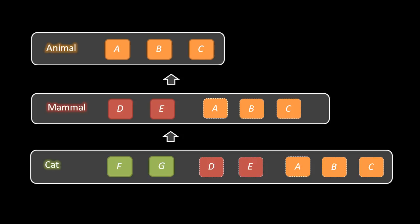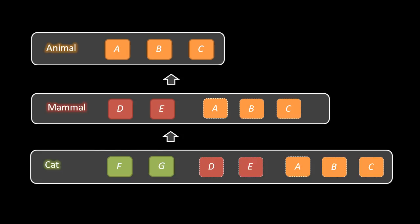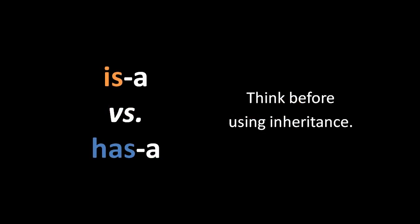In practice, the vast majority of classes programmers make don't really model real-world objects — they tend to represent much more abstract things. With abstract entities it's often not obvious when one type is truly a subtype of another. However, when you can successfully identify such relationships, you may save yourself from duplicating functionality that already exists in another class. It's fairly common that a new feature can be implemented by simply extending an existing class — producing a subtype — letting you focus on just the new functionality. That said, learners often get the misimpression they should use inheritance all over the place; you need to think before using it.